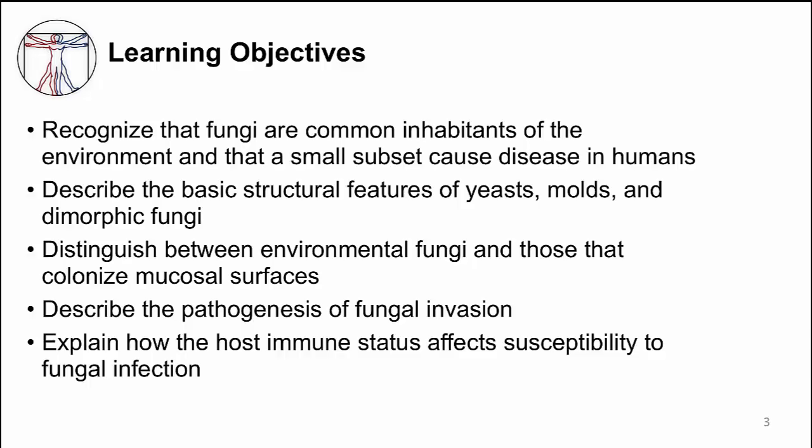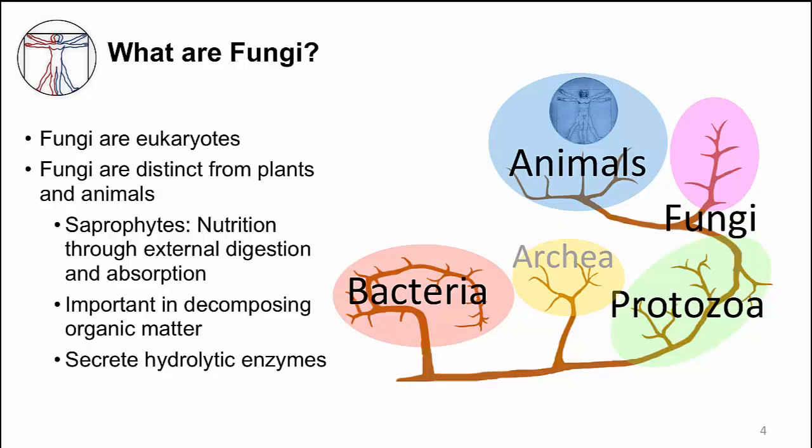So what are fungi? They are multicellular eukaryotes that evolved after protozoa, as you can see in the image. They are distinct from plants and animals. They are not able to make their own energy — they don't have photosynthesis. They depend on digesting and absorbing external nutrients. Thus, they live off of dead or decaying organic matter. In other words, they are saprophytes. In order to obtain nutrition, they secrete a number of hydrolytic enzymes to destroy organic matter.